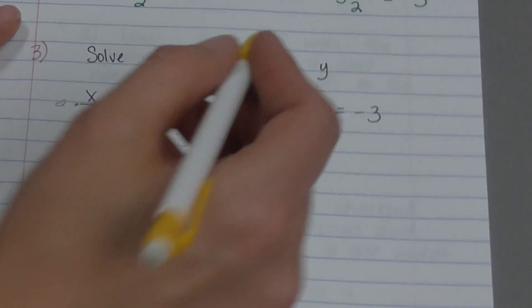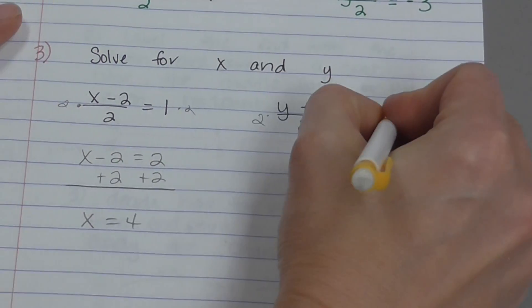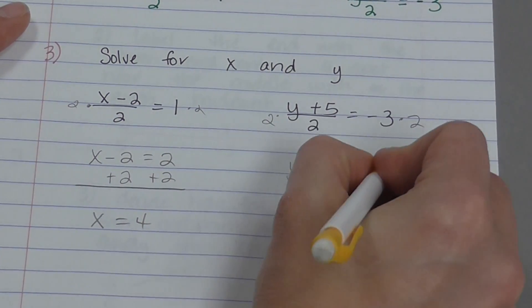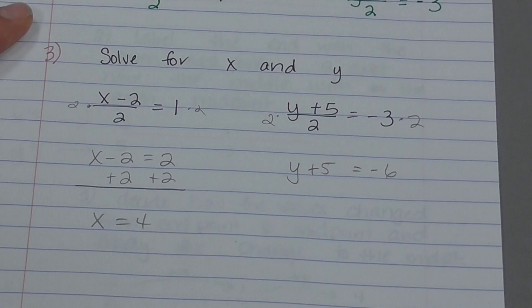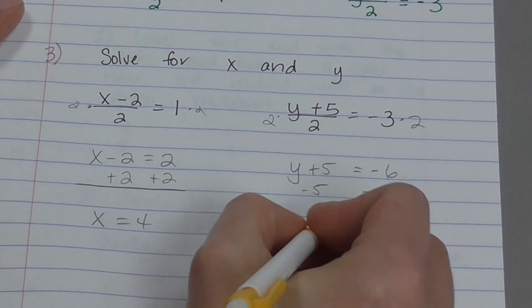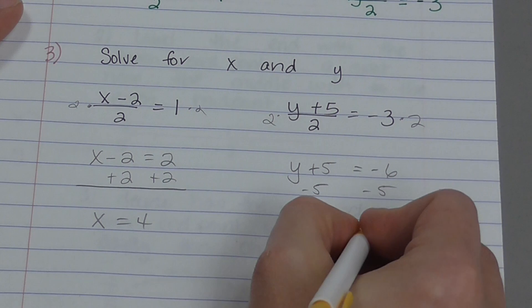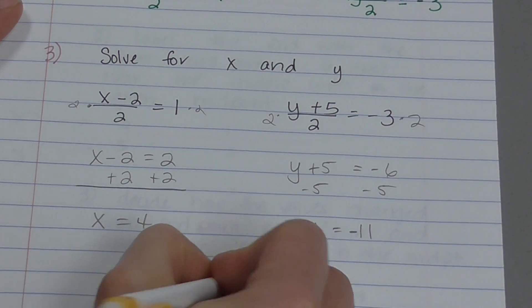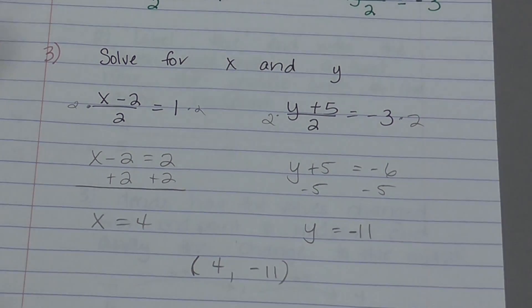I'm going to do the same thing for y. Multiply both sides by 2. y plus 5 equals negative 6. Subtract 5 from both sides. And I get y equals negative 11. So my other end is 4, negative 11. That is my other endpoint.